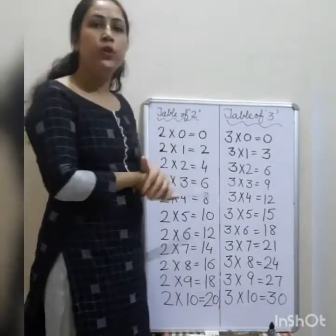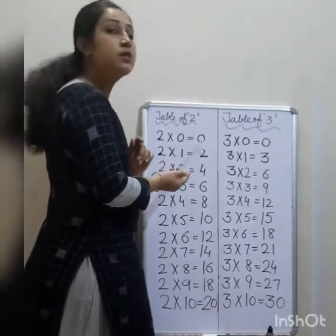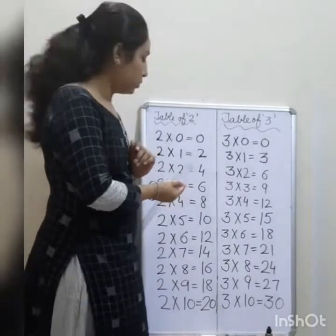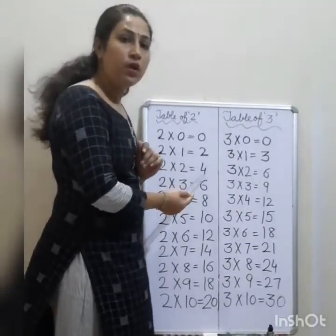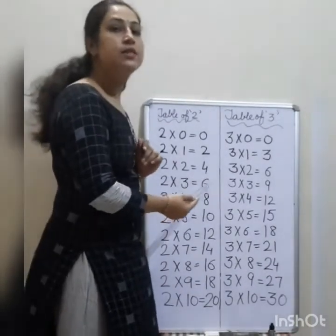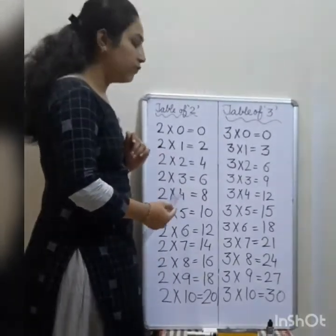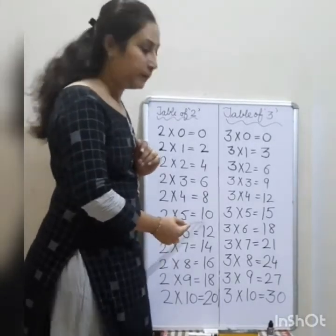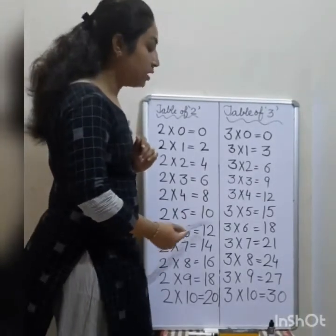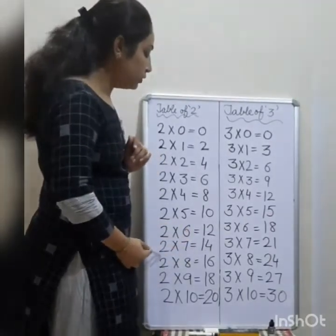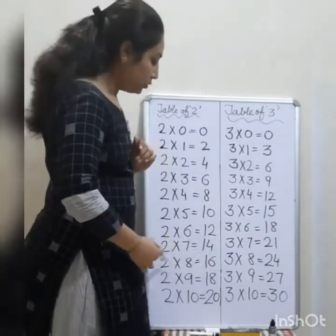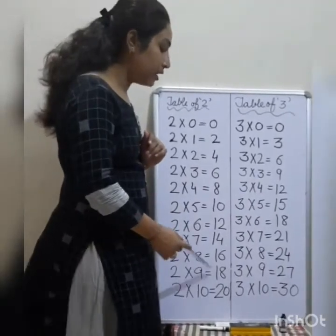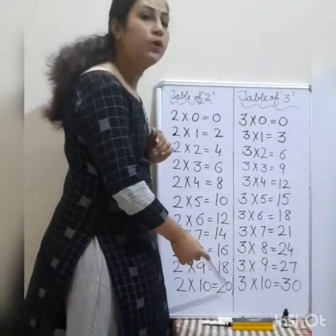Table of 2: 2 0's are 0, 2 1's are 2, 2 2's are 4, 2 3's are 6, 2 4's are 8, 2 5's are 10, 2 6's are 12, 2 7's are 14, 2 8's are 16, 2 9's are 18, and 2 10's are 20.